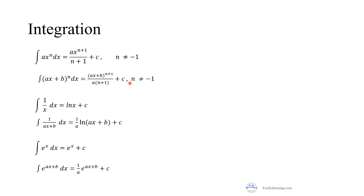When n equals negative 1, x to the power of negative 1 is simply 1/x. When you integrate 1/x you get ln x + c. For O-level you don't need to write a modulus sign, but at A-level you would write ln|x|. Check your syllabus if you're not taking the Singapore O-level exam. If you integrate 1/(ax + b), you get (1/a) ln(ax + b) + c, where c is an arbitrary constant. It must strictly be ax + b — it cannot be ax² + b or similar.